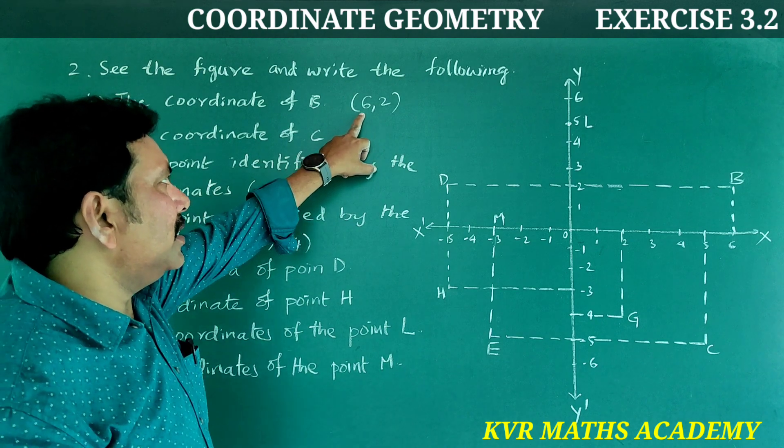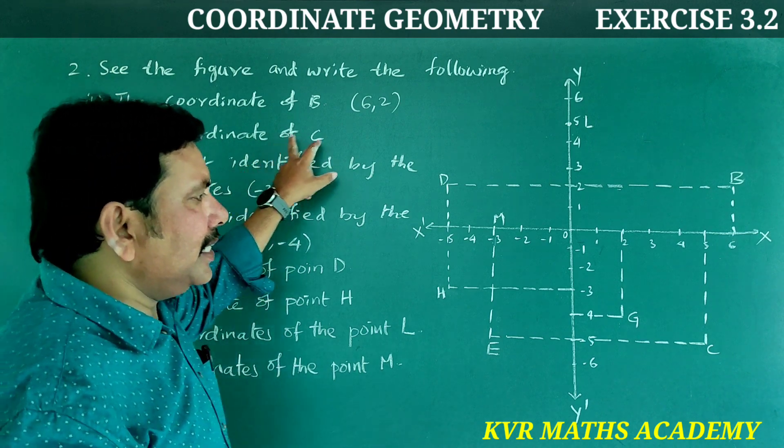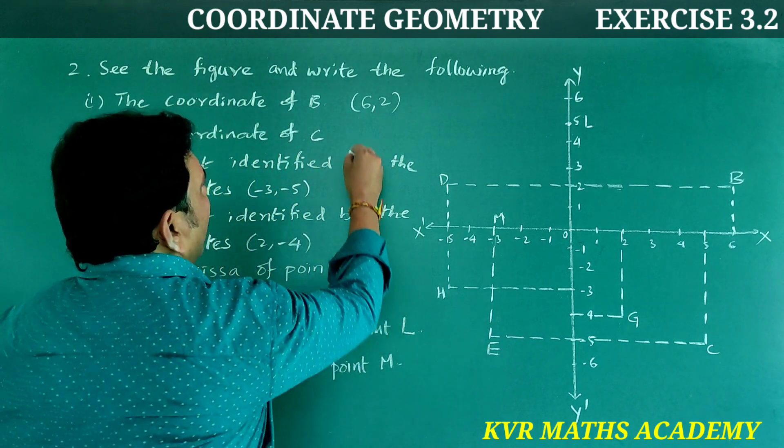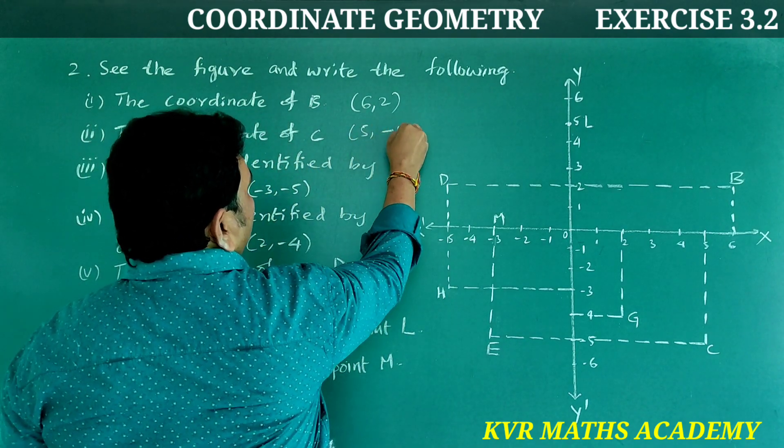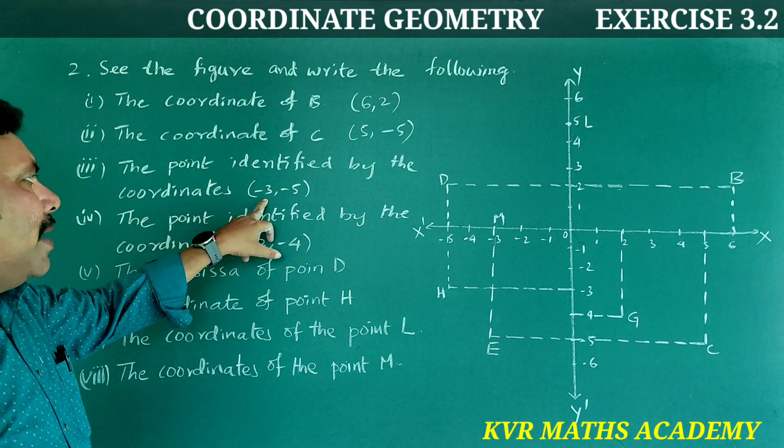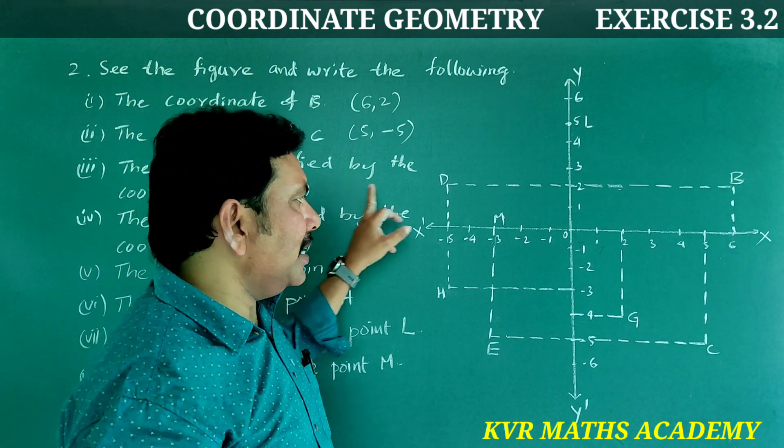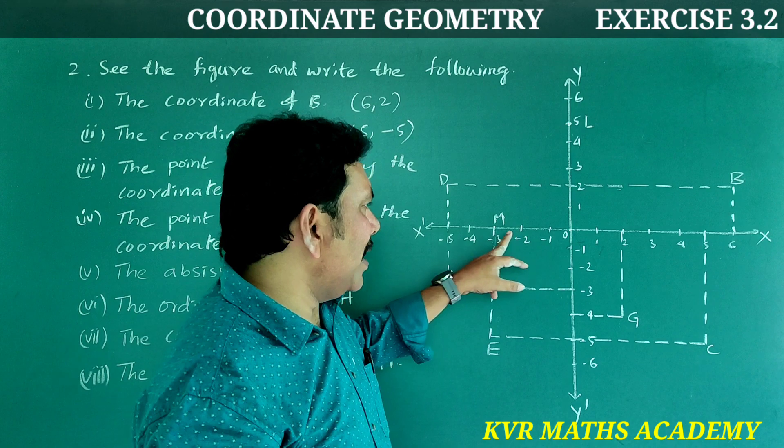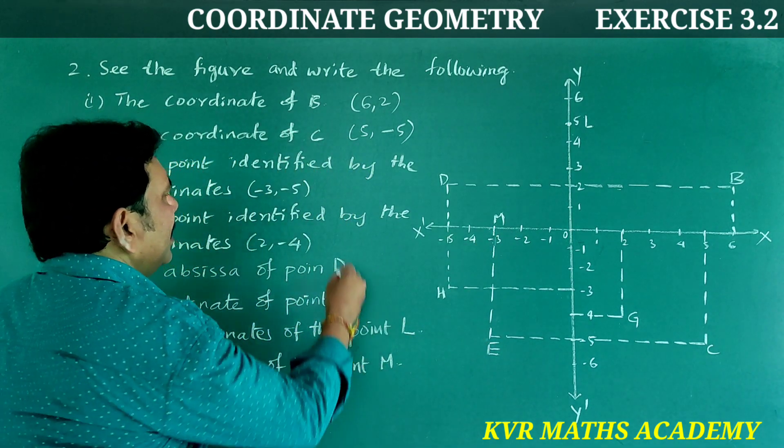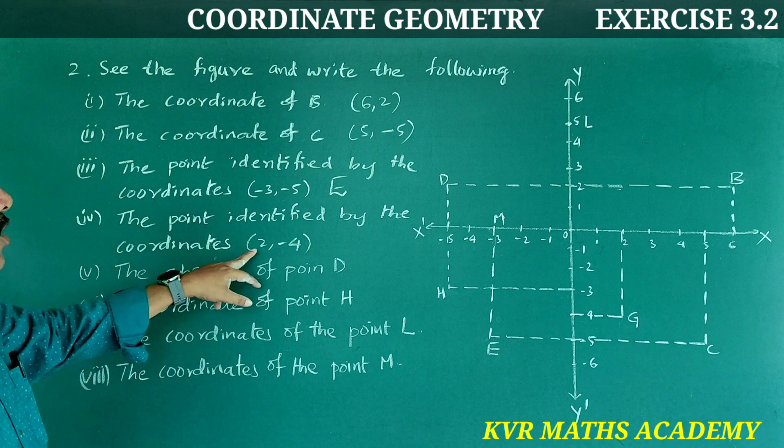X-coordinate is 6, y-coordinate is 2: (6, 2). Next, the coordinate of C: x is 5, y is -5, so (5, -5). Right. Next, the point identified by the coordinates (-3, -5): x-axis is -3, y-axis is -5, that point is E. Right answer.